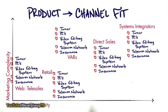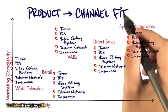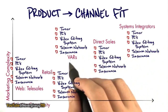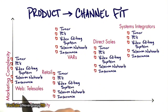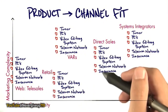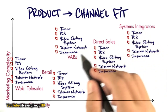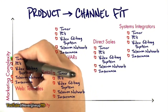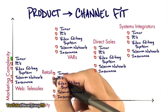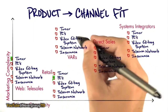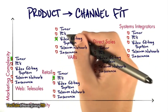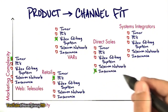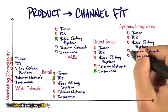Let's take a look at product-channel fit. We talked about system integrators, having your own direct sales force, the role of value-added resellers, retail, and web or telesales — and which products fit best under each channel. For telesales, the best answer was toner. For retail, PCs. For VARs, turnkey video editing systems. For direct sales, insurance — sold that way for the last hundred years. And for system integrators, putting together a telecommunications network is their expertise.